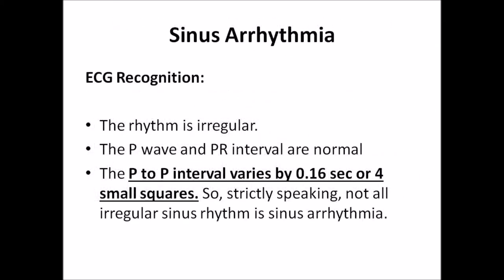Now let's talk about sinus arrhythmia. It is recognized on the surface EKG with a rhythm that is irregular. The P wave and PR intervals are normal. The P-to-P interval varies by 0.16 seconds or 4 small squares. So strictly speaking, not all irregular sinus rhythms are sinus arrhythmia. Most basic EKG tests would classify any irregular sinus rhythm as sinus arrhythmia. If you are taking a computer test and the rhythm is irregular with a sinus P wave, choose sinus arrhythmia. Remember, the P-to-P interval varies by 0.16 seconds in sinus arrhythmia.